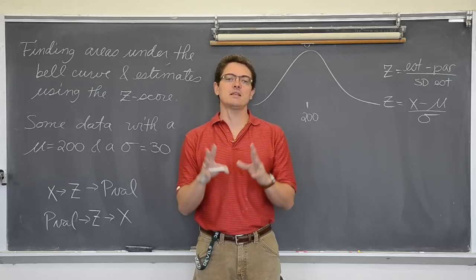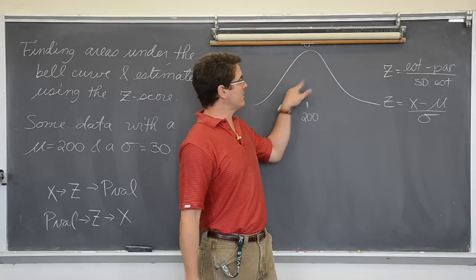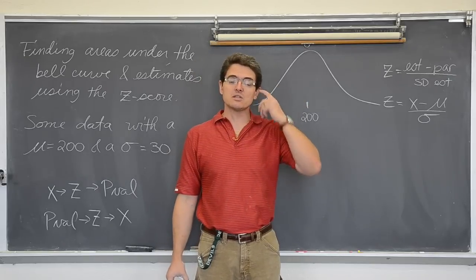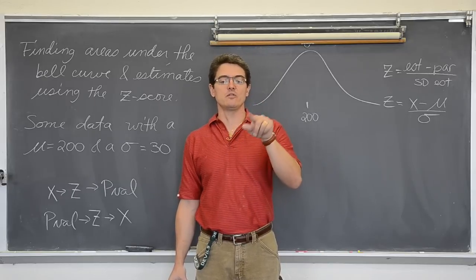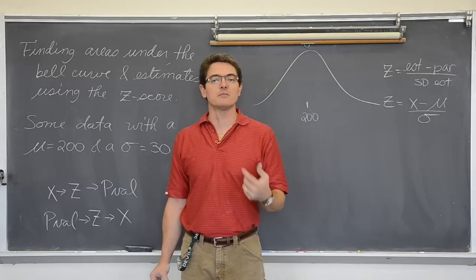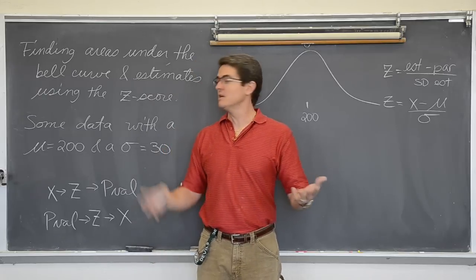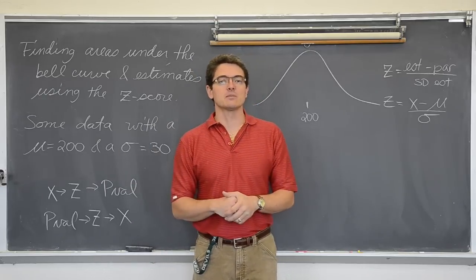And the reason why is because we can take that area that we get out of the bell curve and easily convert it into a percent by just moving the decimal over two places. And that will be the probability of observing whatever event that our word problem might actually be talking about.